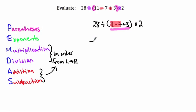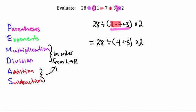Starting a new line of work with an equal sign: 28 divided by, still parentheses, 11 minus 7 is 4, plus 3, close parentheses, times 2. Looking again — I still have parentheses remaining, so I do the work inside: 4 plus 3. New line: 28 divided by 7 times 2. The parentheses are now used up.